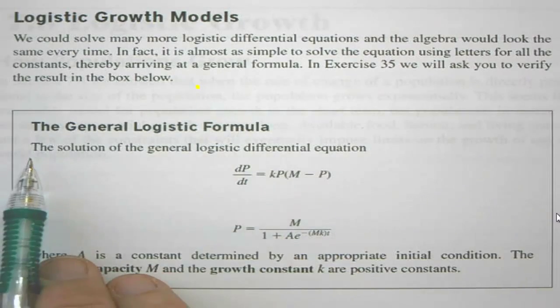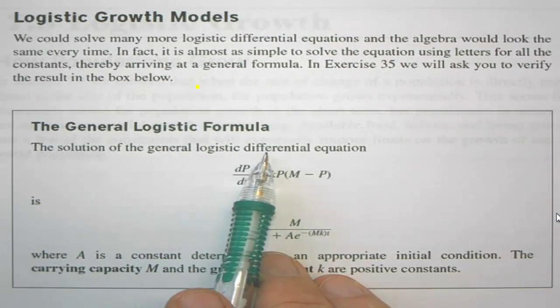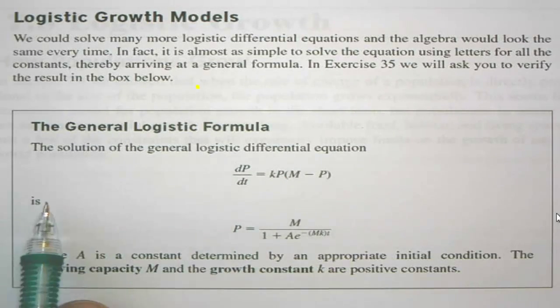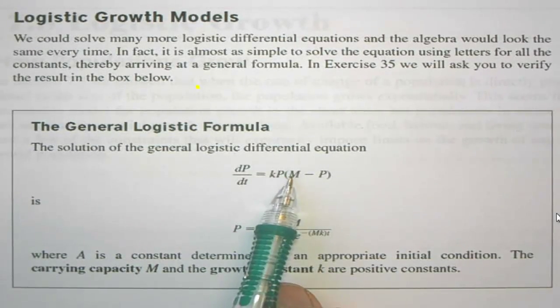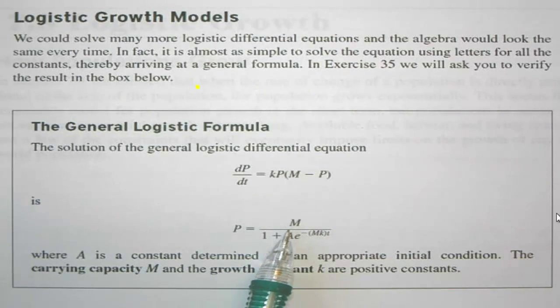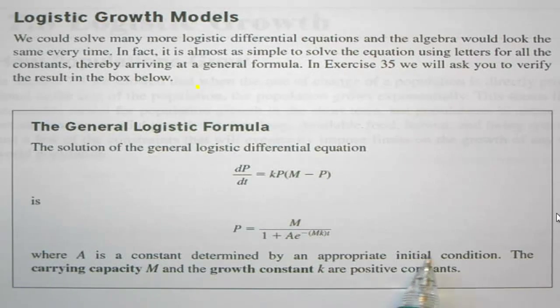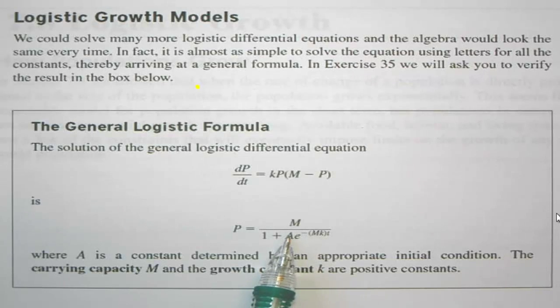The General Logistic Formula. The solution of the general logistic differential equation dP/dt = kP(M - P) is P = M/(1 + Ae^(-Mkt)), where A is a constant determined by an appropriate initial condition. So we can get A using that initial condition, using the 61 and the 0. The carrying capacity M and the growth constant k are positive constants.